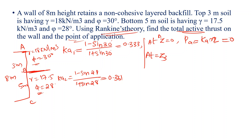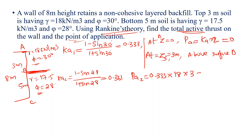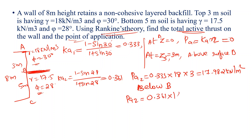At the interface at z equals 3 meters, we calculate the pressure just above and just below point B. Using the respective K values for each soil layer, the pressure just below B is 19.49 kilo Newton per meter square.